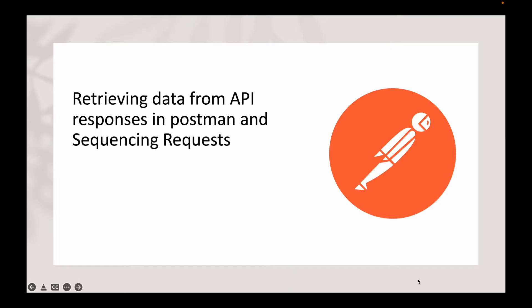What happens is, to call any API nowadays we use OAuth. First we have to generate the OAuth token, then call the first service to get the token, from the second service get some value, pass it to the third API, and then use the output of the third API in the fourth API. So basically you have a sequence of APIs.